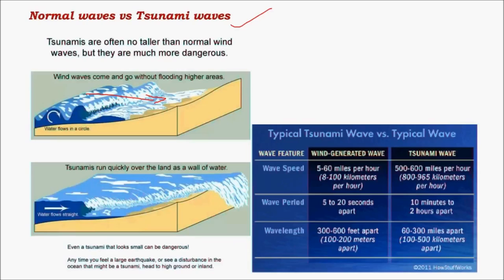Normal waves have comparatively higher frequency compared to tsunami waves. The amplitude in deep water bodies is much higher compared to shallow waters, because once they enter shallow waters most of the energy is lost and they die out soon after reaching the coast, just like in this figure.